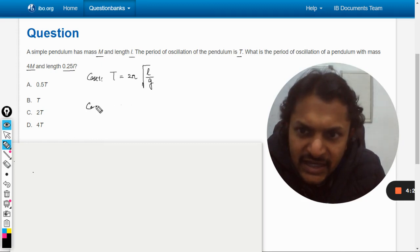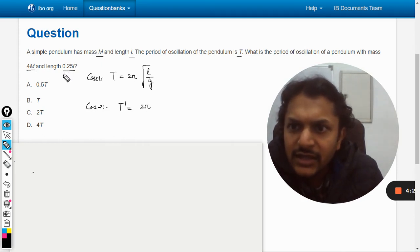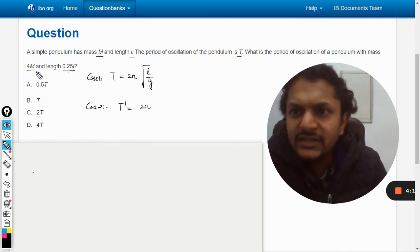Capital T is given as this. Now case 2, T dash, it will be taken as the length is this and the mass is also given, but mass is not required. So it doesn't matter if mass is more.